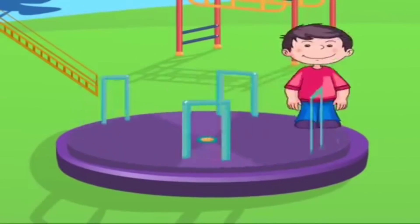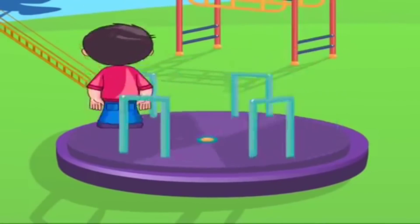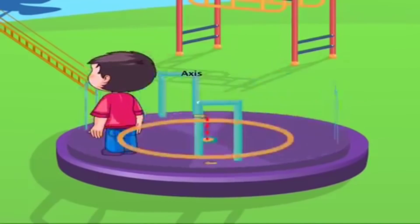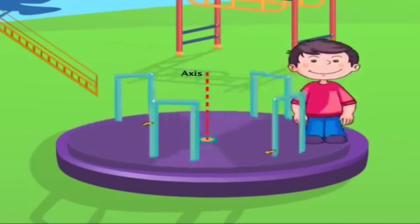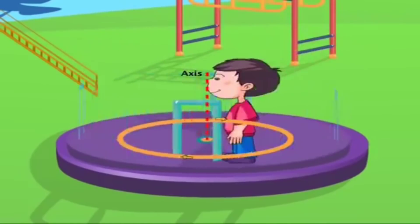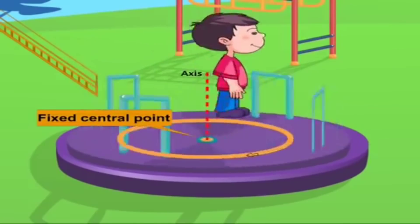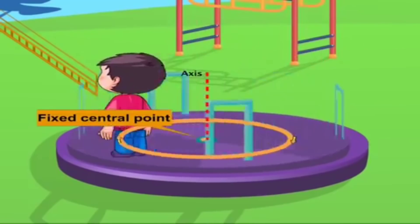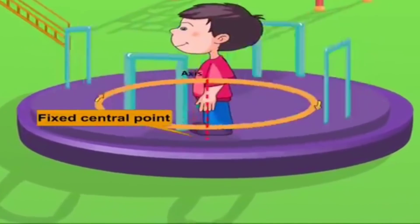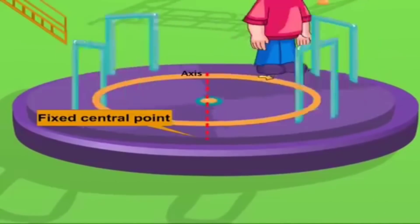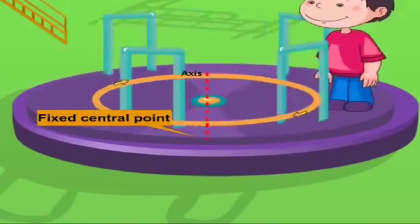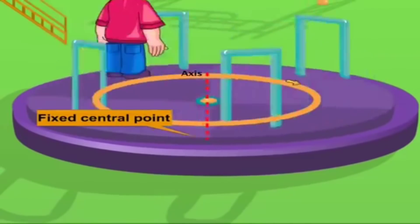Look — the little child on the merry-go-round is moving along a circular path. The center point of the merry-go-round remains fixed. The merry-go-round moves around an axis passing through the center point.